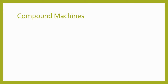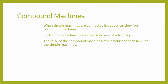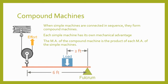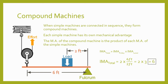When simple machines are connected in sequence, they form compound machines. Each simple machine has its own mechanical advantage, and the mechanical advantage of the compound machine is the product of each individual mechanical advantage. In this case it's the mechanical advantage of the pulley times the mechanical advantage of the lever. The IMA of the pulley is 2 to 1, and the IMA of the lever is the effort distance over the resistance distance, or 6 over 2. Multiplied together, the ideal mechanical advantage of the system is 6 to 1. Try some practice problems with mechanical advantage, efficiency, and static equilibrium — these concepts make more sense the more you work with them. Good luck!